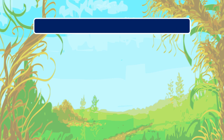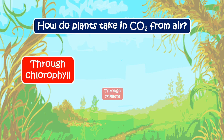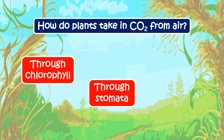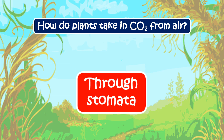The next question is: how do plants take in carbon dioxide from the air? The options are through chlorophyll, through xylem, through stomata, or through roots. The right answer is through stomata.